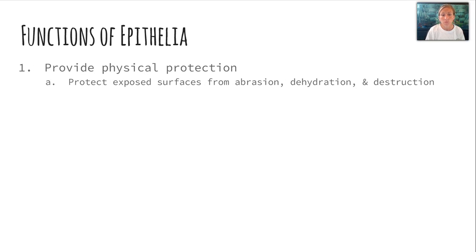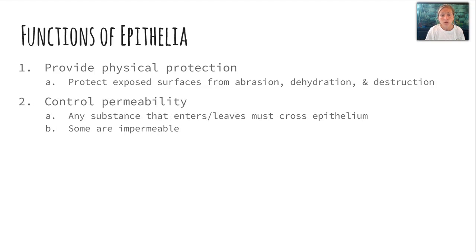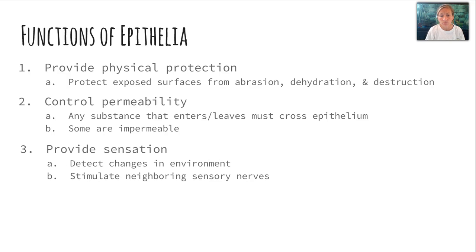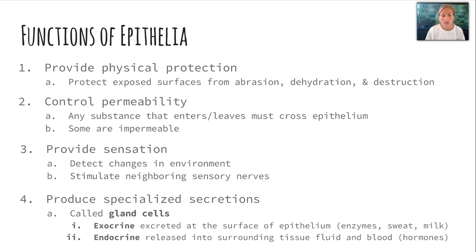Functions of the epithelia include providing physical protection, keeping them from being abraded, dehydrated, or destroyed. They control permeability, which means they can allow some things to enter and leave, or they can be impermeable and not let anything in or out at all. They provide sensation by detecting changes in the environment and passing on that response to neighboring sensory nerves. Finally, they produce specialized secretions through gland cells — two types: exocrine, which excretes to exterior surfaces and can include enzymes, sweat, or milk; and endocrine, which releases into surrounding tissues or the blood in the form of a hormone.